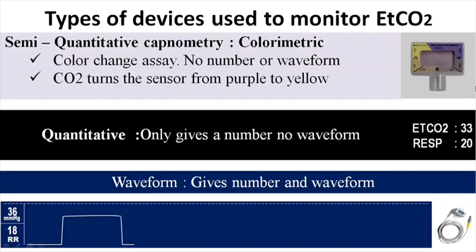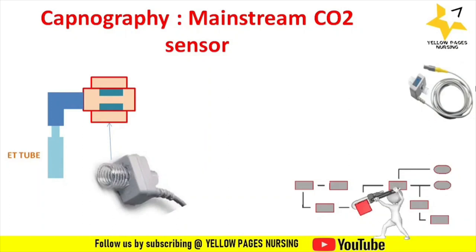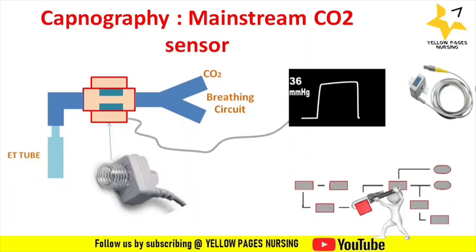Regarding the capnography device setup, there are many types of CO2 sensors including mainstream, sidestream, and microstream CO2 sensors. For the mainstream CO2 sensor setup: the sensor is connected at the terminal end of the ET tube, the breathing circuit is connected at the other end of the sensor, and a cable from the sensor connects to the monitor to display CO2 waveforms.